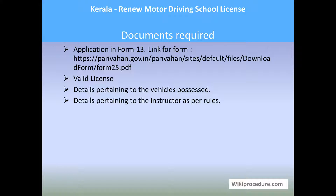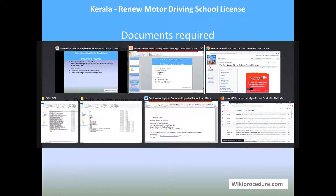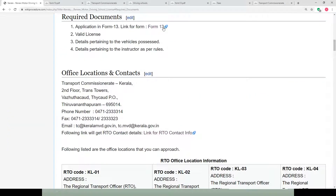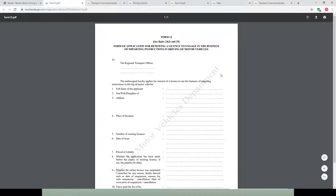Let us see the documents required. You need application form 13, which is downloadable, and a valid license, details pertaining to the vehicles possessed, and details pertaining to the instructor as per rules. In our wikiprocedure page under the required documents section we have provided the link for the user to reach the form. Get this form downloaded, print it, and fill it for applying.